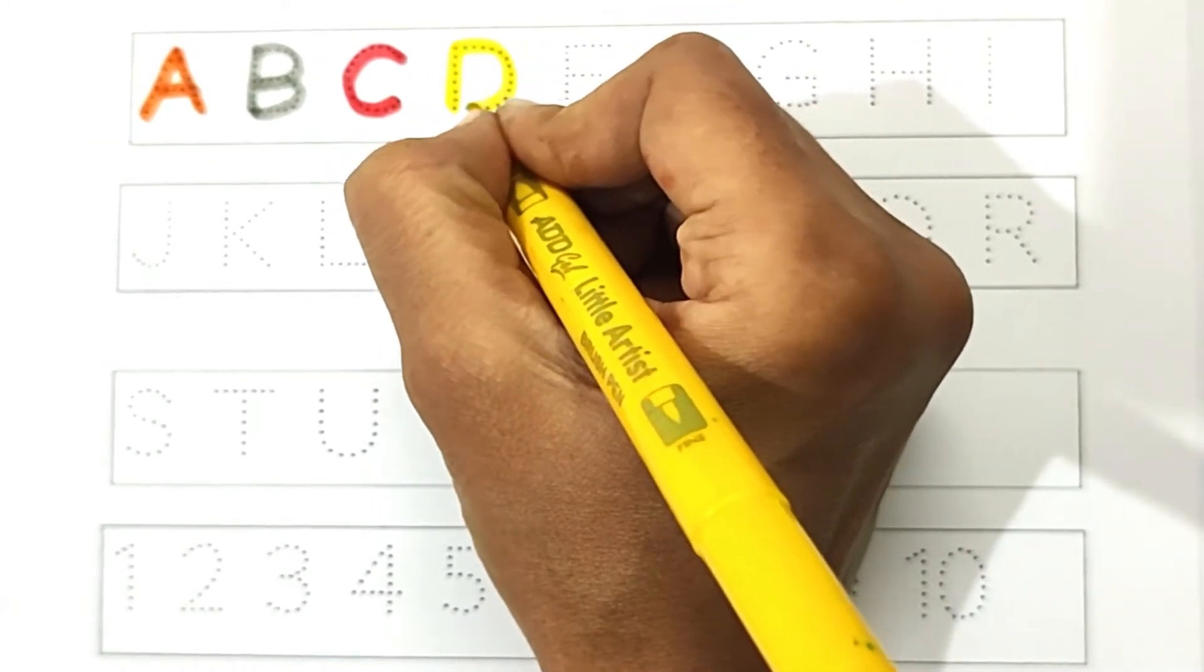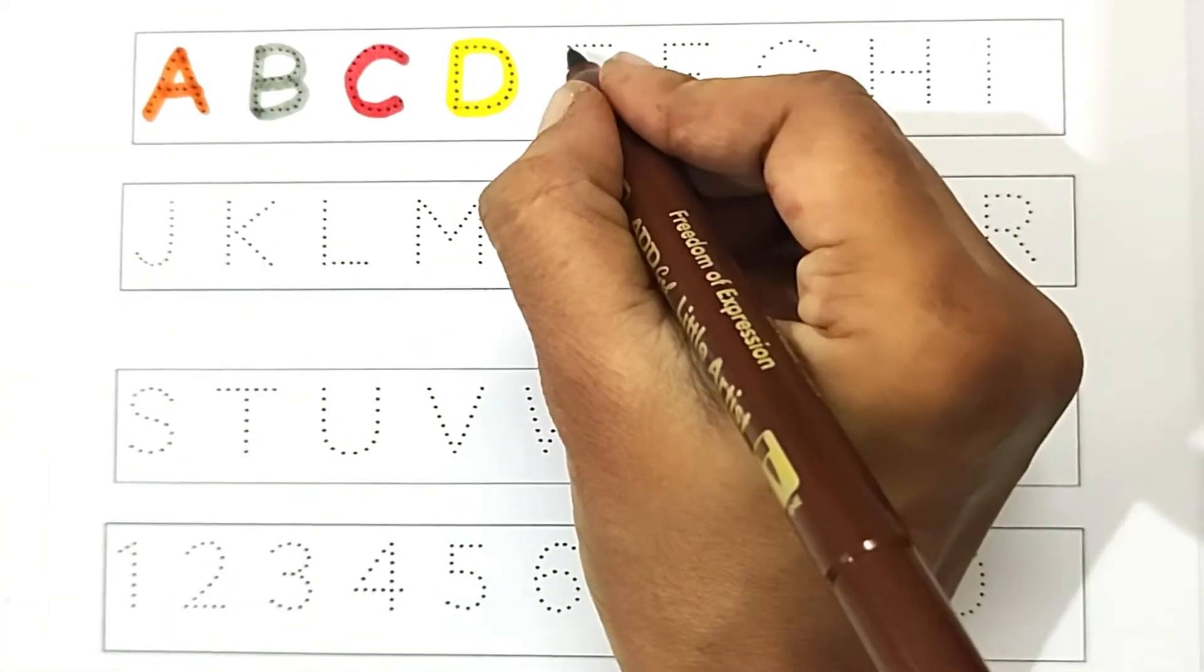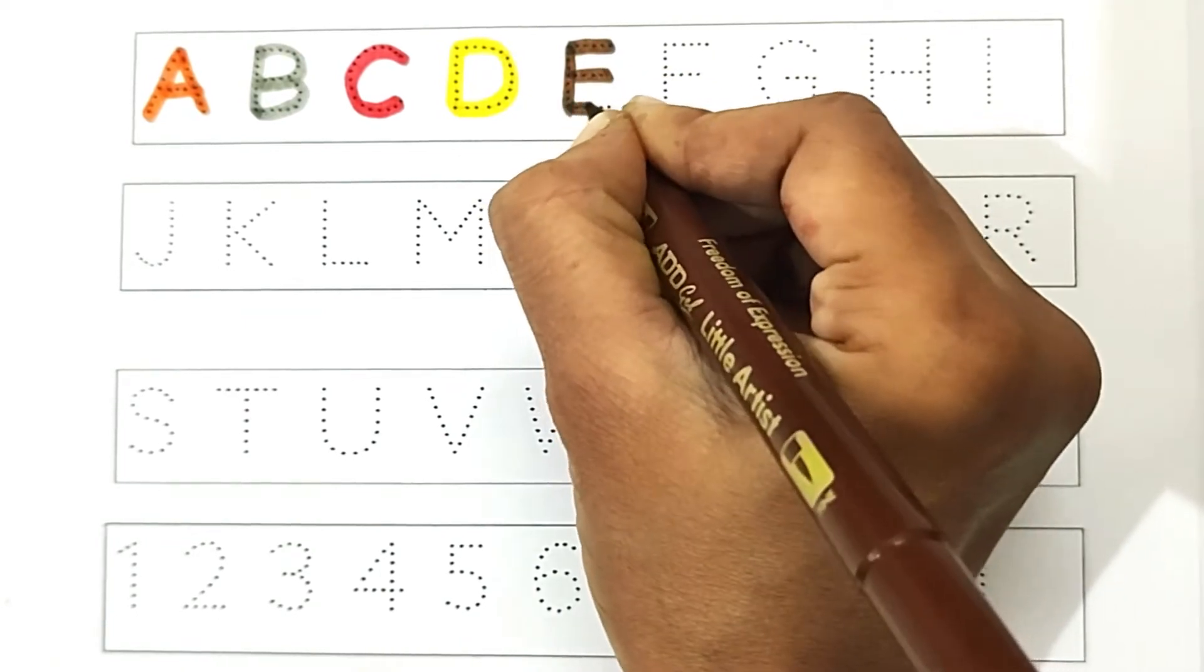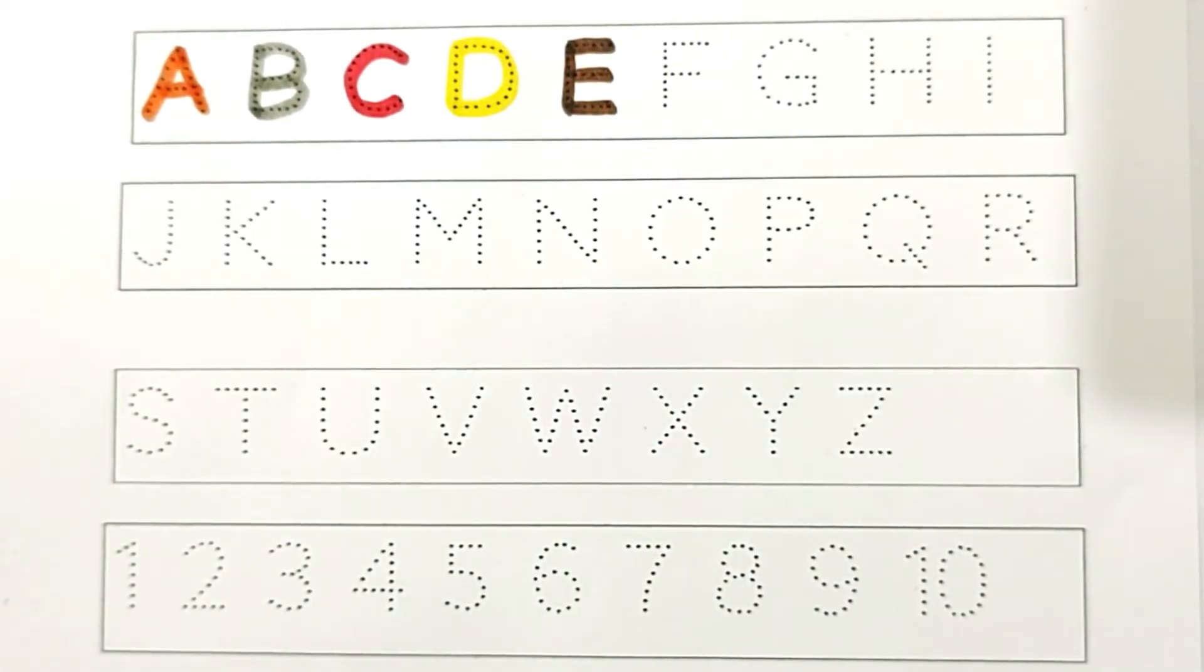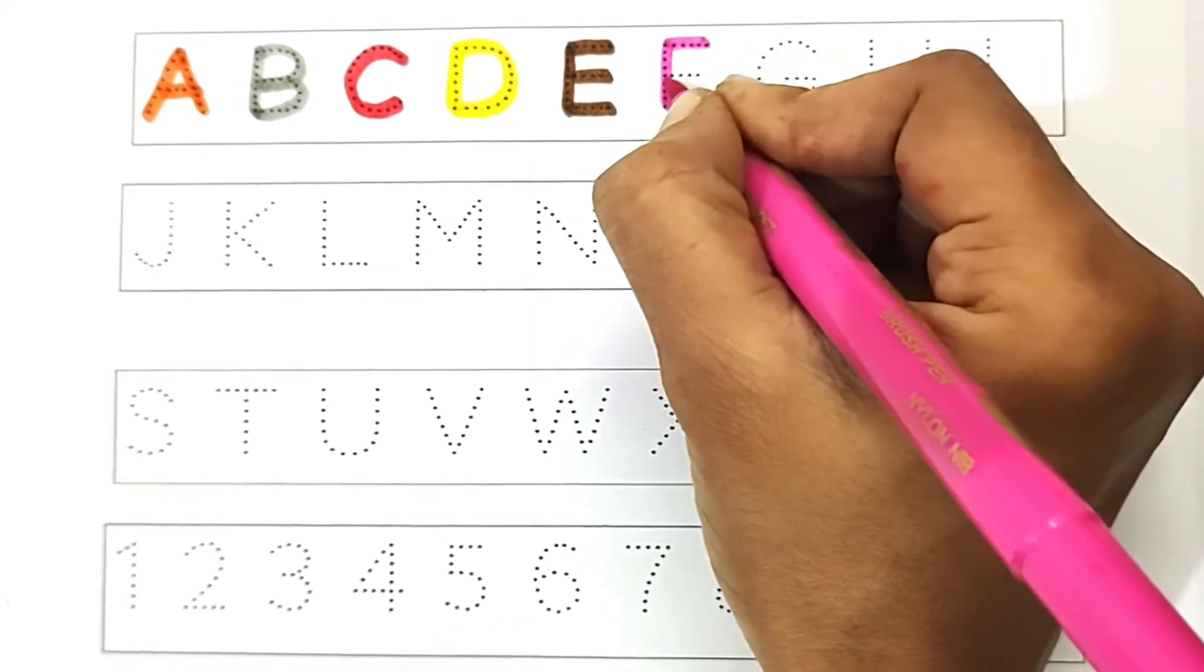D. D. For donut. E. E. For eggs. F. F. For fish.